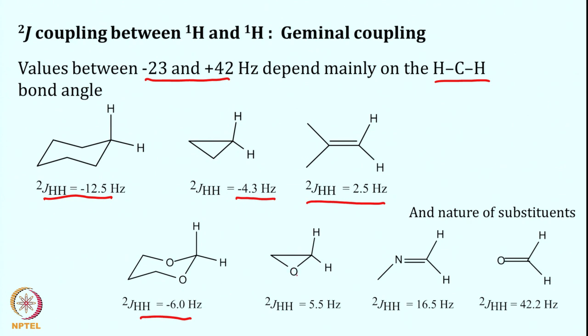When one oxygen is attached — or when a carbon is replaced by oxygen — the coupling changes significantly. Where it was −4.3 Hz, it becomes +5.5 Hz, a change of nearly 10 Hz. Similarly, replacing carbon with nitrogen changes the proton-proton coupling by almost 14 Hz. When nitrogen is replaced by oxygen, the coupling increases to 42.2 Hz, demonstrating that bond angle, hybridization, and substituents all affect coupling strength.